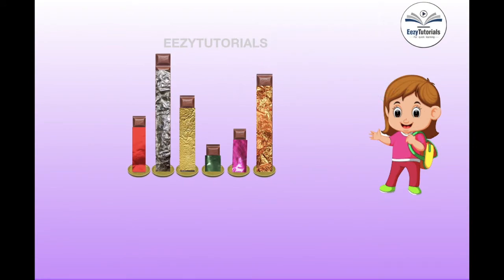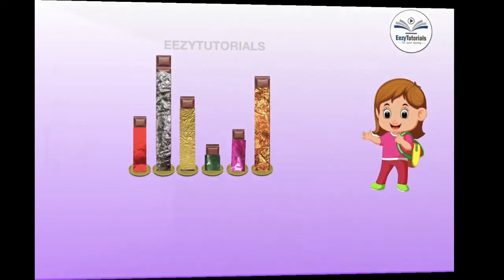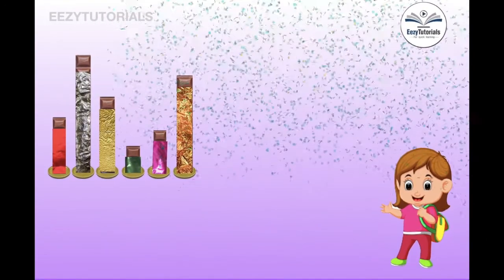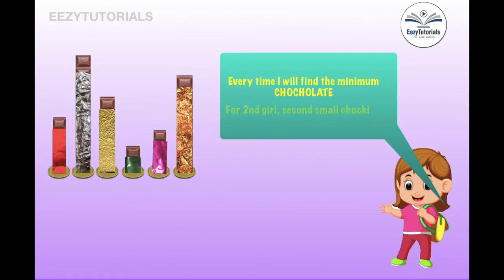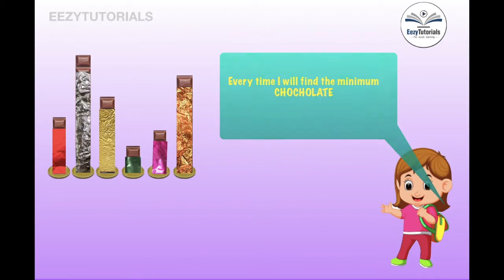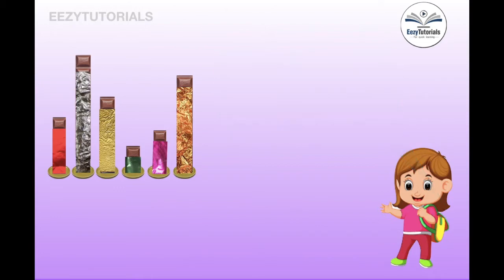So what is selection sort? The first smallest chocolate goes to the first girl, the second smallest chocolate goes to the second girl, and so on. The biggest chocolate will be for the last girl — that is Thippo.